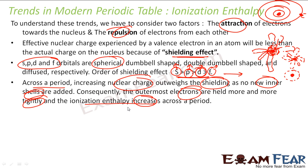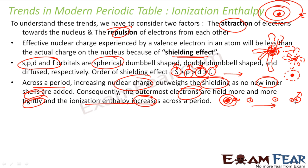Since electrons are held more tightly, the ionization enthalpy increases because more energy is now required to pluck one electron. For example, going across a period, atomic size decreases — so from a bigger atom it is easy to pick one electron, but from a smaller atom, since it is held more tightly, picking out the electron is difficult. So ionization energy increases as we go across the period.